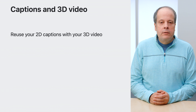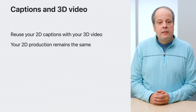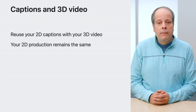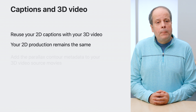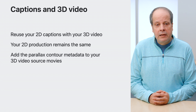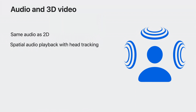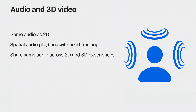Captions you already produce for 2D can be reused with 3D. This means the processes you use today or the vendor you work with can continue to work in 2D with your 3D production. Also, this means your 3D content is agnostic to the choice of languages, horizontal and vertical layout, or potential use of accessibility subtitle preferences by users. By adding the described parallax metadata, the platform adapts dynamically. As for audio used with 3D video, you can use the same audio used for 2D delivery. As the platform supports head tracking, consider using a spatial audio format. To share the same audio between 2D and 3D experiences, the video should match timing-wise, having the same edits. If they differ, you will need separate audio tracks between the 2D and 3D assets.